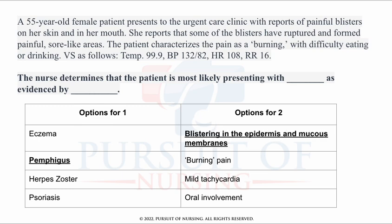The nurse determines that the patient is most likely presenting with pemphigus, as evidenced by blistering in the epidermis and mucous membranes. Pemphigus is an autoimmune disease that causes blistering in the epidermis. The patient may present with large, flaccid, bulla-type blisters. These blisters are in the epidermis and have a thin covering of skin — they break really easily, leaving large denuded areas of skin. On initial exam, patients may have crusting areas instead of intact blisters.